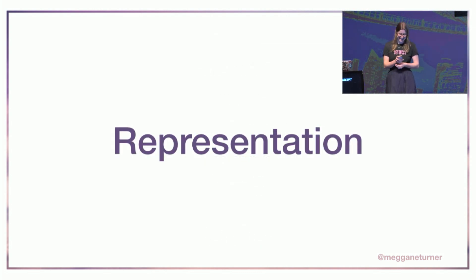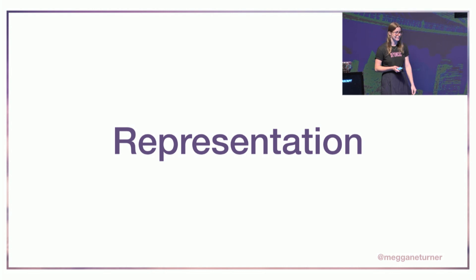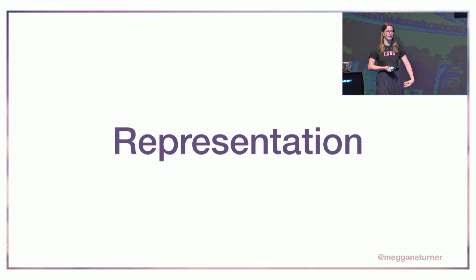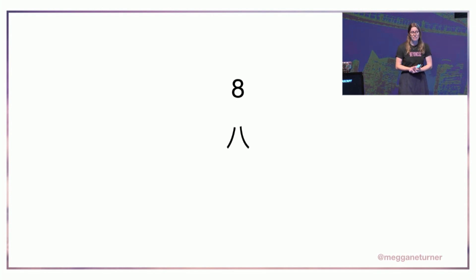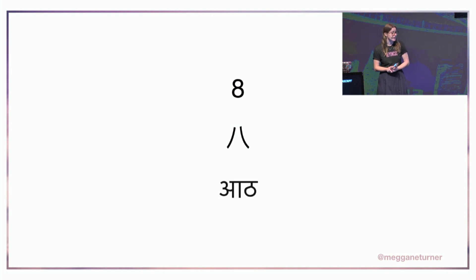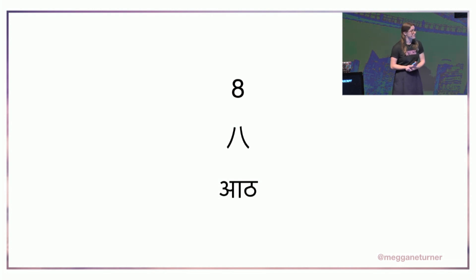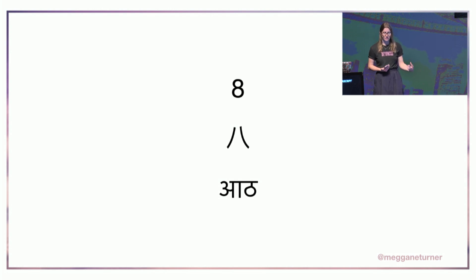Just as we can classify numbers and group them in different ways, we can also represent them in different ways. When I talk about representation, I just mean how we communicate the numbers we're using. In human languages, if I asked you to think of the number eight, many people would imagine the Arabic numeral eight. Some might imagine Ba, the Mandarin Chinese character. Some may think of Athar, the Hindi number for eight. All of these are the same thing — just different symbols to represent the number eight.